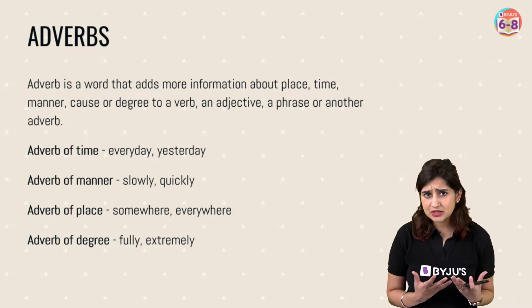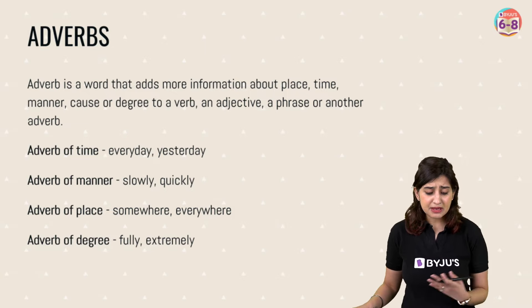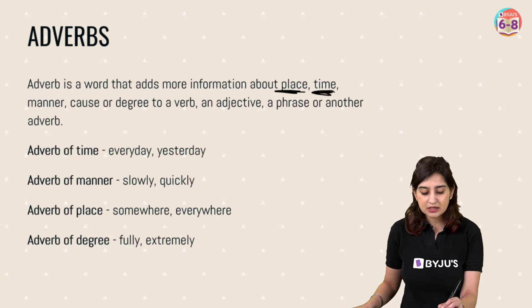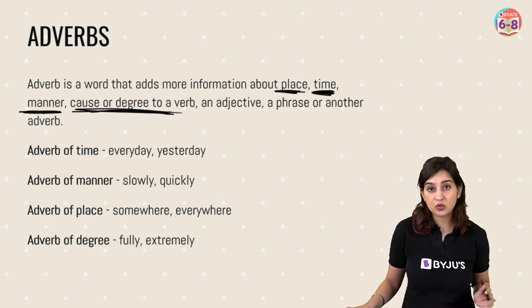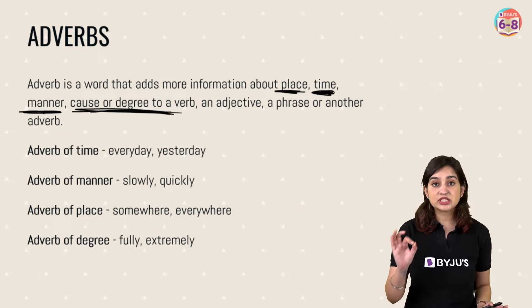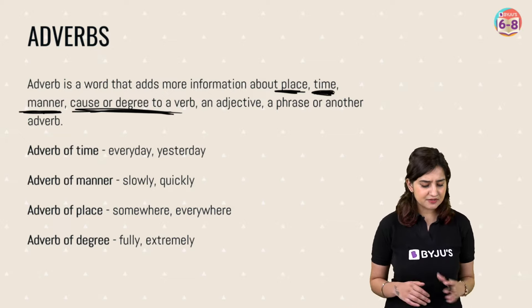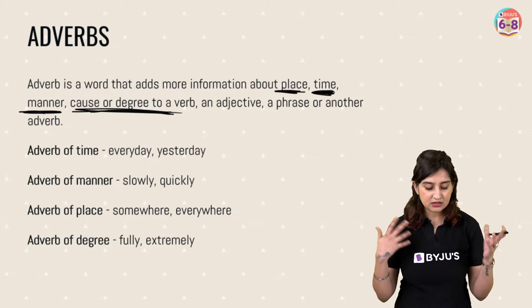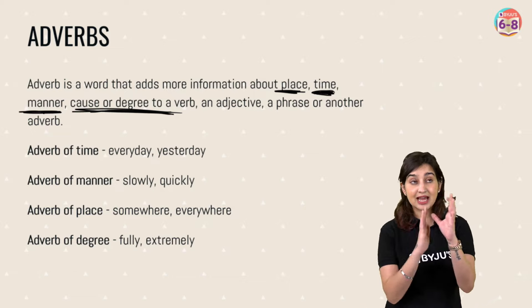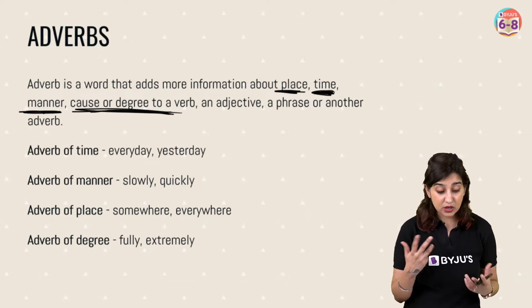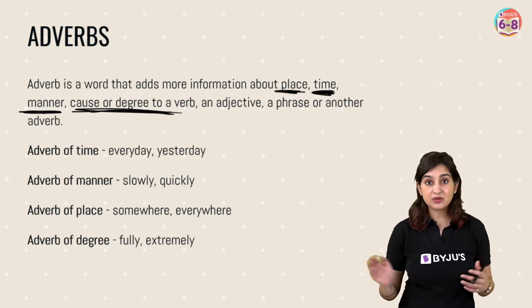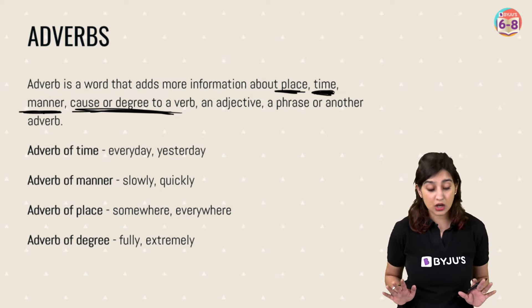Now, this is what type of information we give with adverbs in a sentence. They tell us about place — where is it happening; time — when is it happening; manner — how is it happening (slowly, quickly); and cause or degree — why is it happening and to what extent. Examples of place adverbs: somewhere, everywhere, outside, inside.